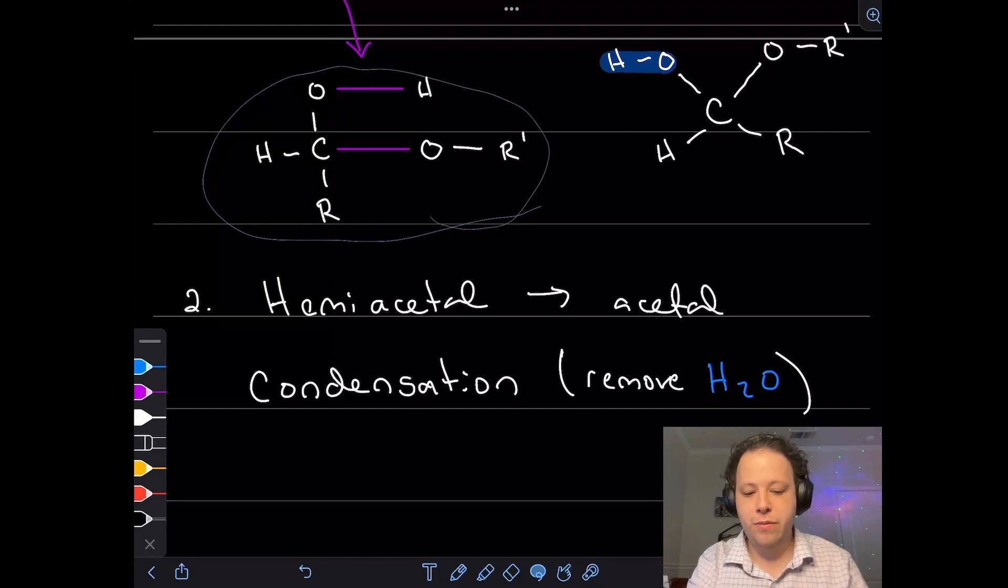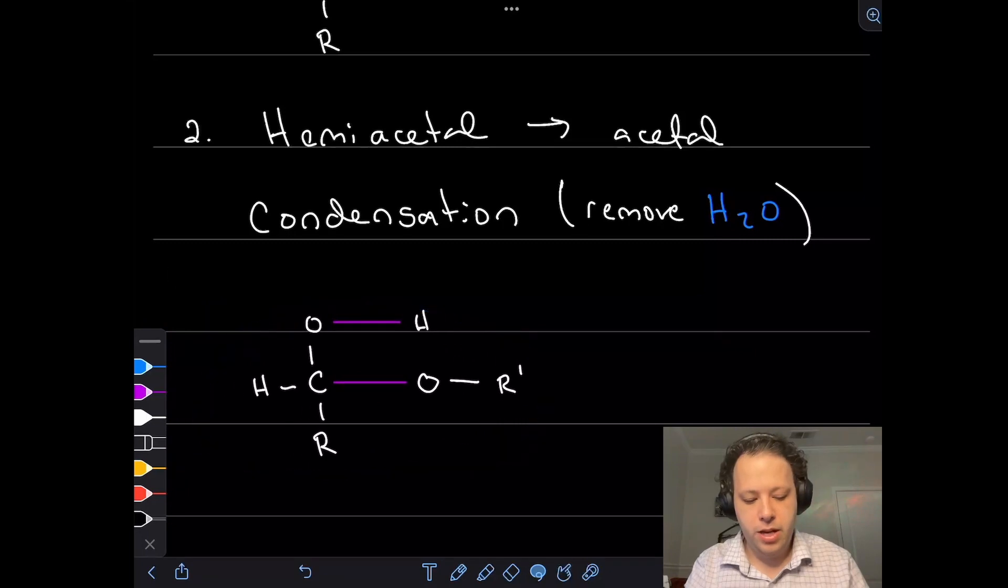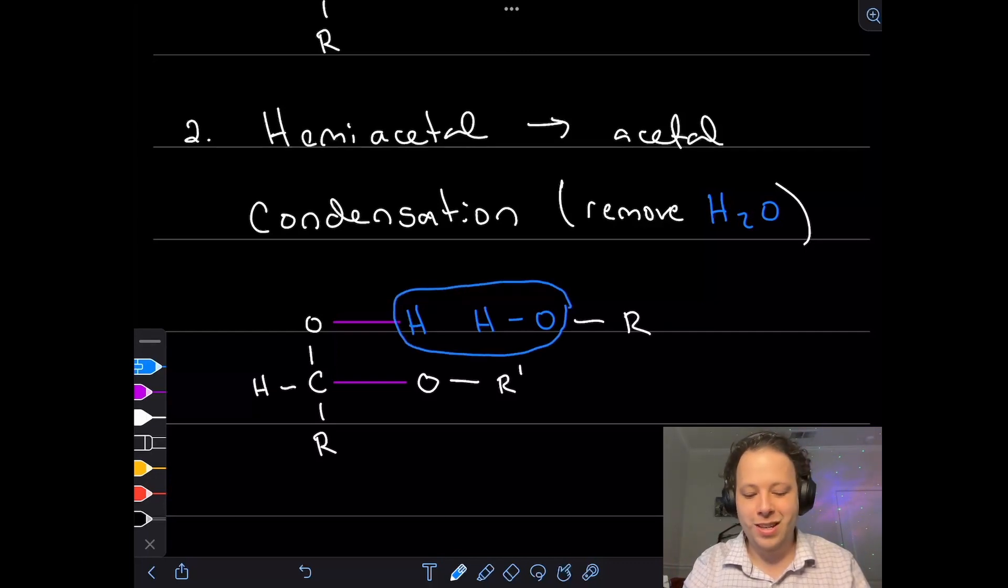Let's take our hemiacetal from before. And what we're now going to do is copy and paste it down here. Being that this is in a solution of alcohol, and an alcohol reacted with this earlier, we're going to now show how we're going to be removing water. So if I draw an alcohol with my OH attached to an R group, and I'm going to color in my H from my other structure, you might see how H2O is removed. We have H2O that is right here, and we can see that that's going to be removed in the process.